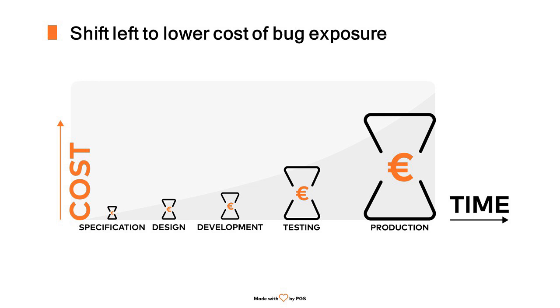Let me quickly tell you several interesting facts. What is the general approach we have at PGS to quality assurance? When I talk about quality in IT projects, I think the best way to visualize the way we work is to look at this graph. It shows how the cost of fixing possible problems, bugs, and defects rises in comparison to the phase of the software development lifecycle we are at.